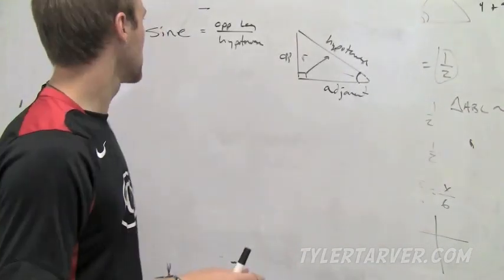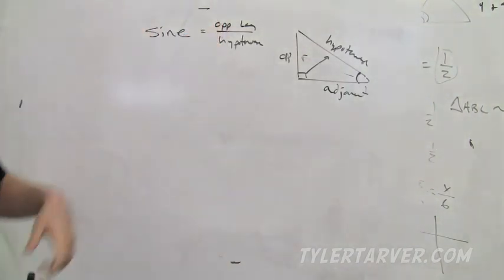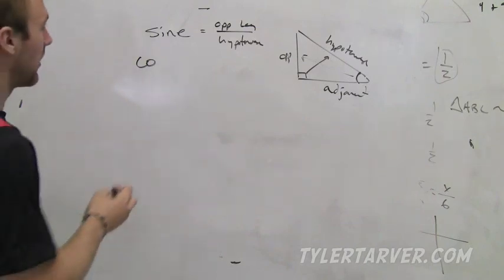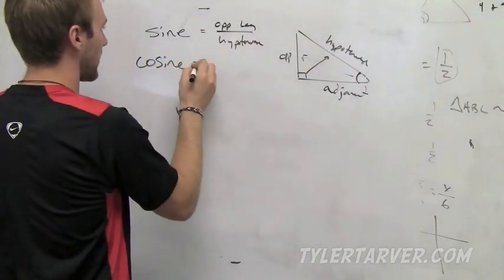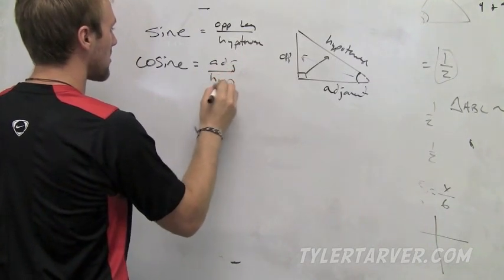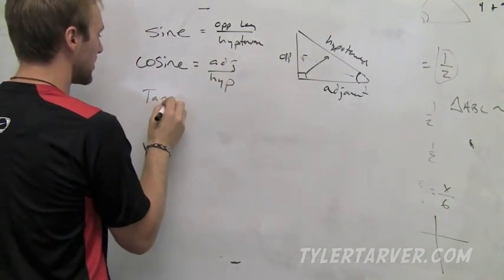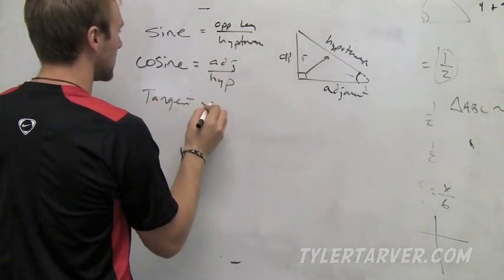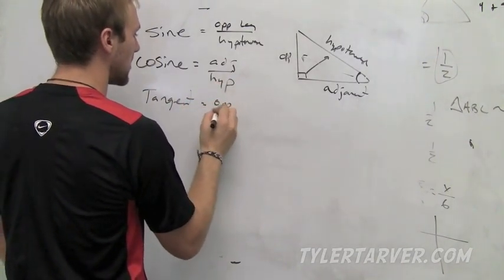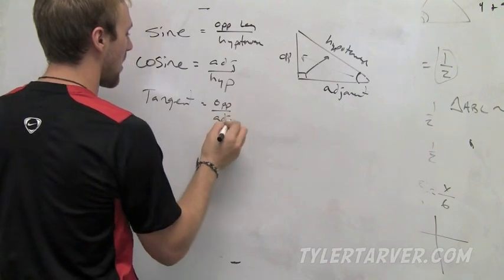So we got sine is opposite over hypotenuse. Cosine is adjacent over hypotenuse, and then there's tangent, which is opposite over adjacent.